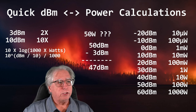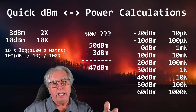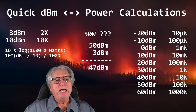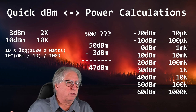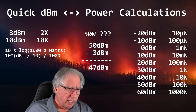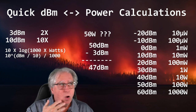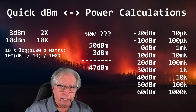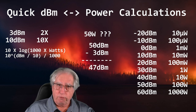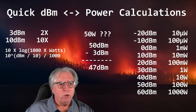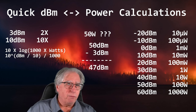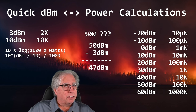We can use the same approach with 50 watts. Starting from 100 watts at 50 dBm, cut it in half by subtracting 3 dBm — that gives us 47 dBm. For 25 watts, half of 50 watts is 25, so subtract another 3 dBm from 47 dBm, giving 44 dBm. It's cumulative, which makes it even easier.